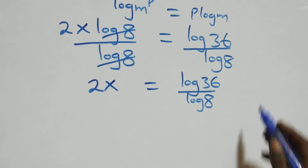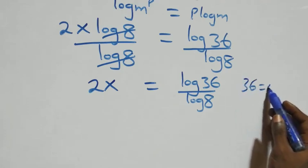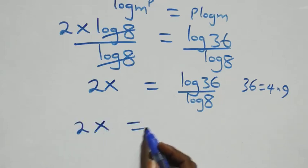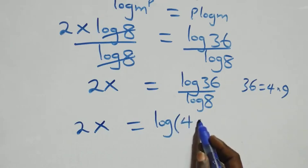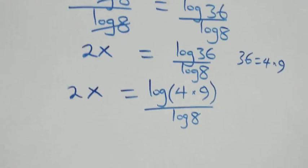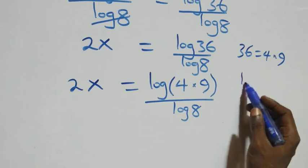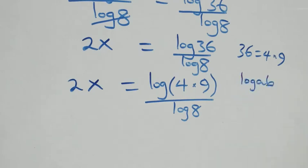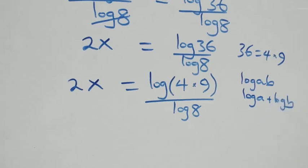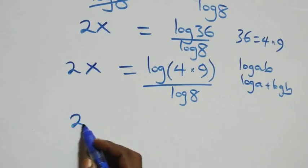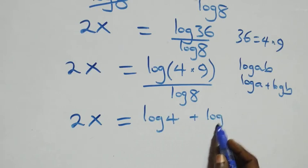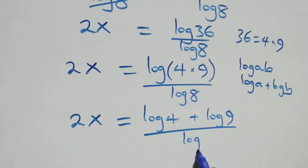From here, we can write 36 as 4 times 9, so we have 2x equals log(4 times 9) over log 8. This follows from the product rule of logarithms: log(a times b) is the same as log a plus log b. So what we have becomes 2x equals log 4 plus log 9, all over log 8.